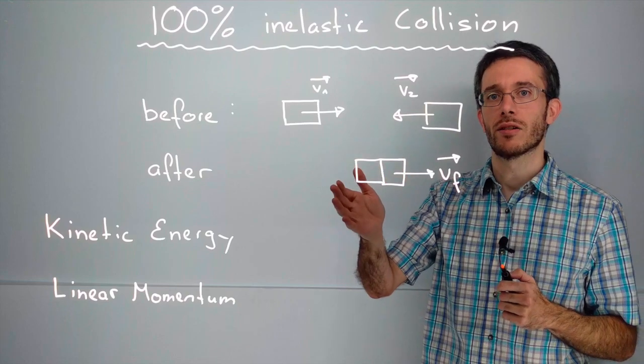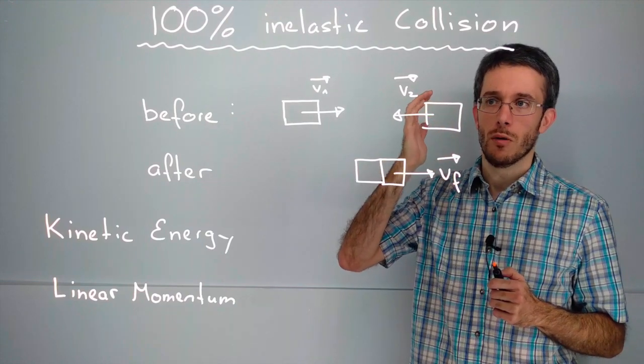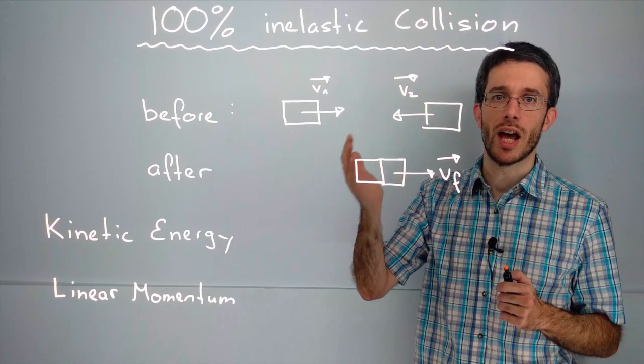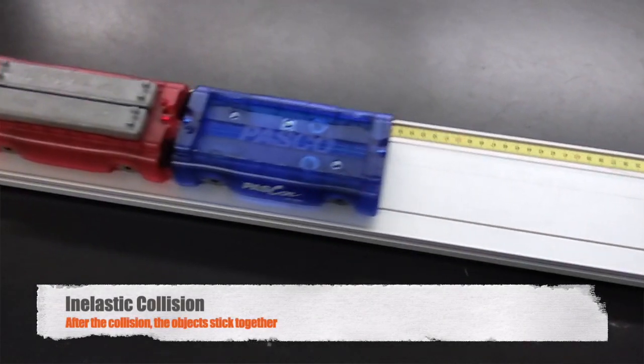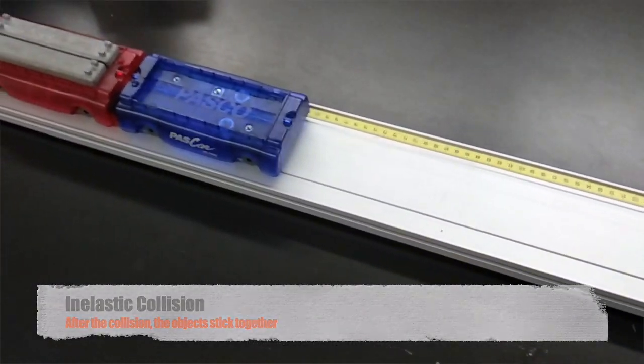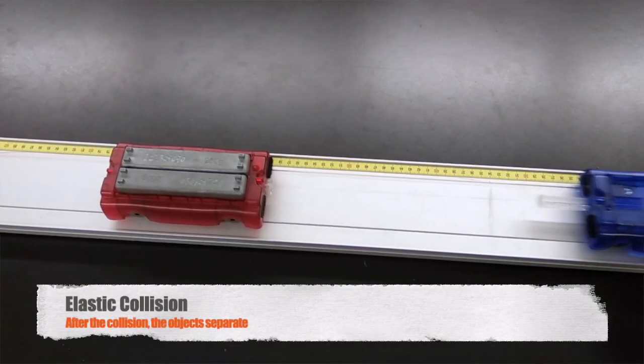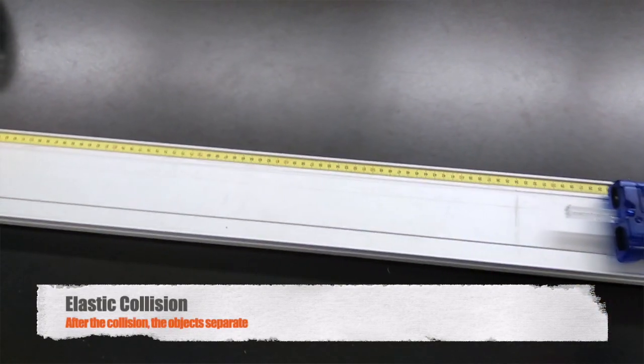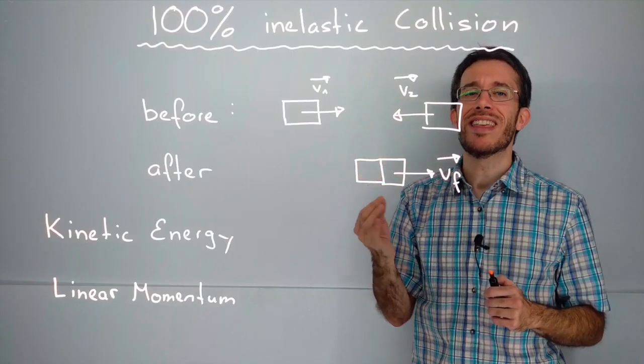A 100% inelastic collision is one of the two extreme cases that can happen when two objects collide. The other extreme case is the 100% elastic collision, to which I will get in another video. Now back to inelastic collision.